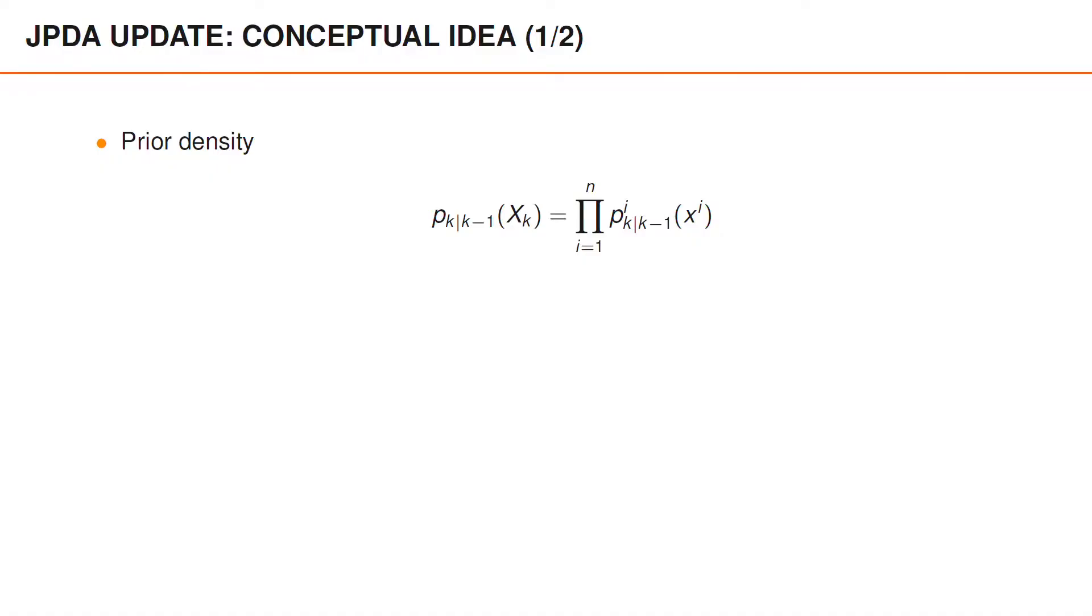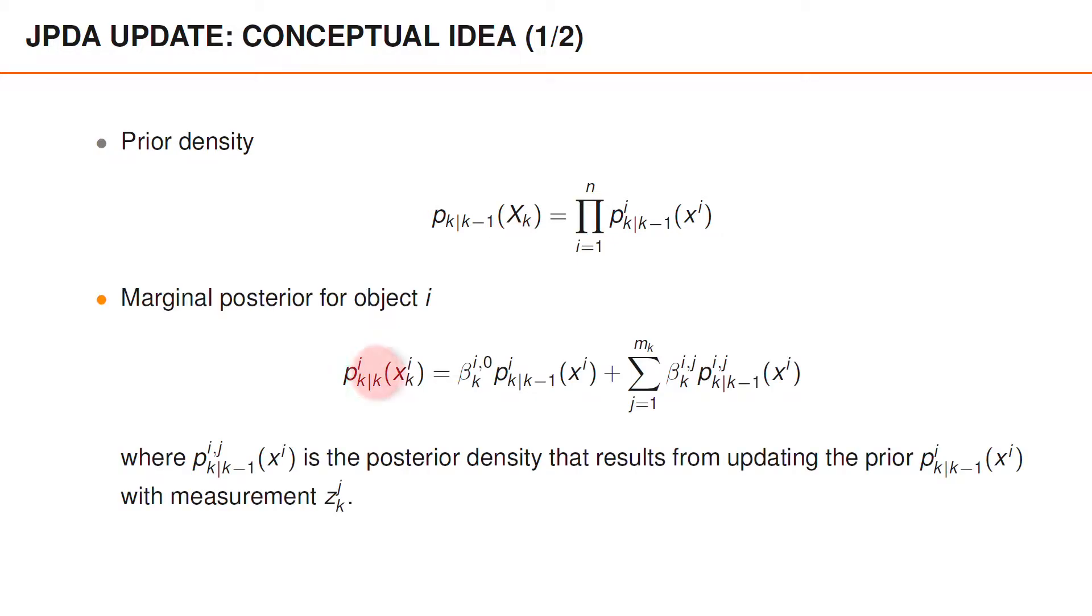The conceptual idea behind the JPDA update can be explained as follows. We start with an independent prior density, and the marginal posterior for object i can be described using the marginal association probabilities. So we have beta i 0 times the prior density.